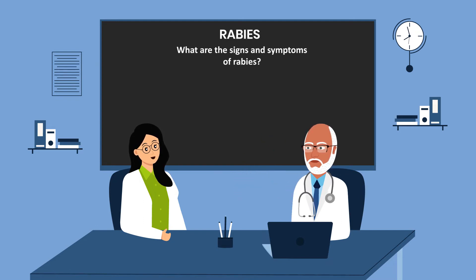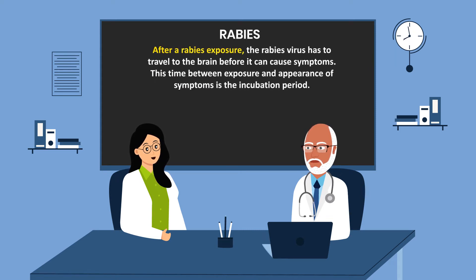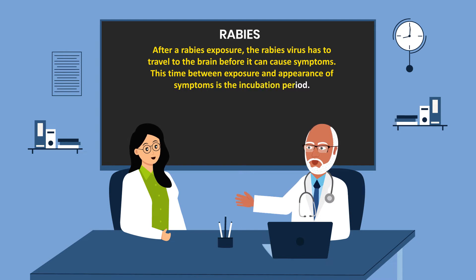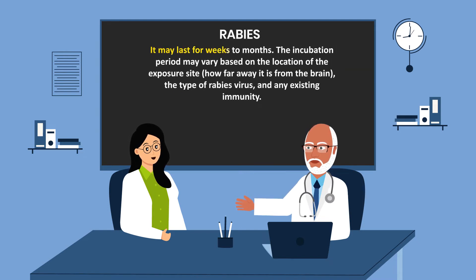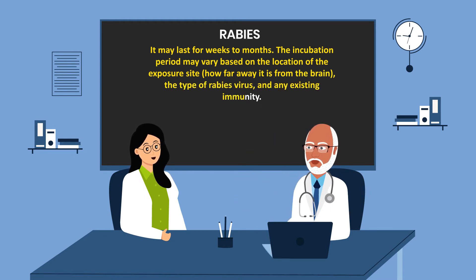What are the signs and symptoms of rabies? After a rabies exposure, the rabies virus has to travel to the brain before it can cause symptoms. This time between exposure and appearance of symptoms is the incubation period, which may last for weeks to months. The incubation period may vary based on the location of the exposure site — that is, how far away it is from the brain — and the type of rabies virus and any existing immunity.